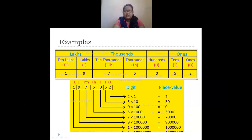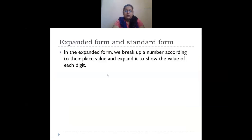One in ten lakhs place: one into ten lakhs is ten lakhs. So the place value of one is ten lakhs. For face value of the same number 19,75,052 — two is two, five is five, zero is zero, five is five, seven is seven, nine is nine, and one is one. Face value is simply the digit itself.